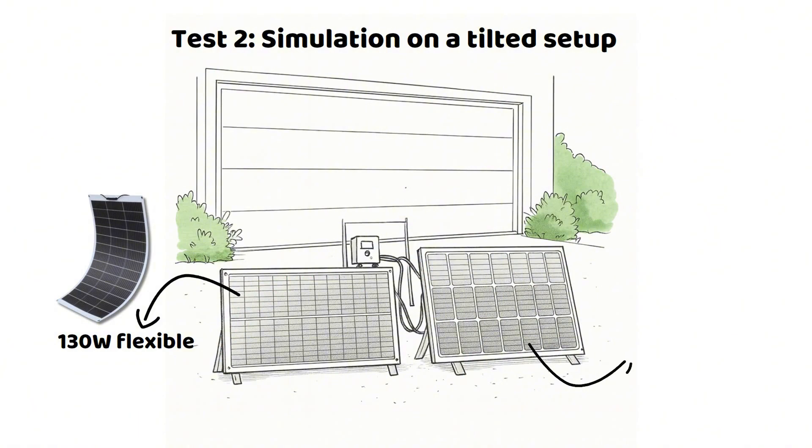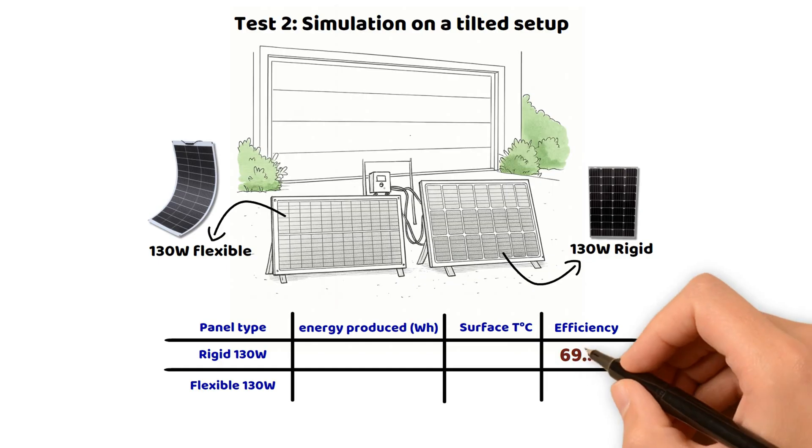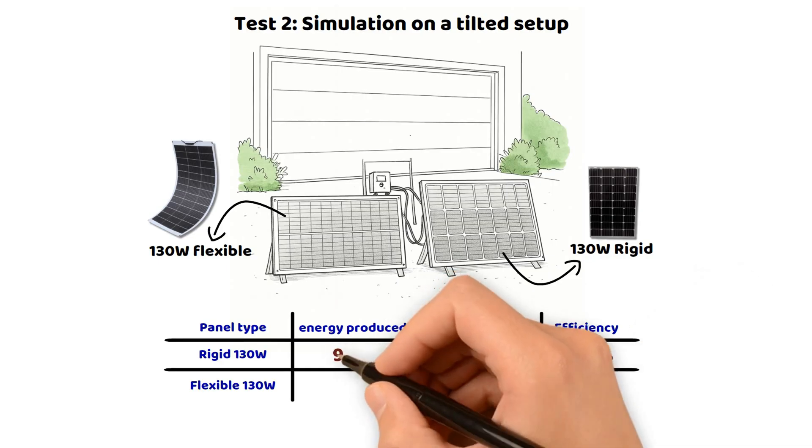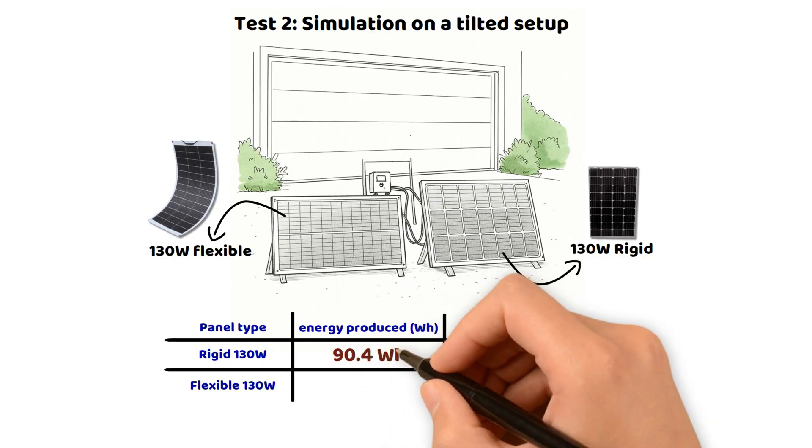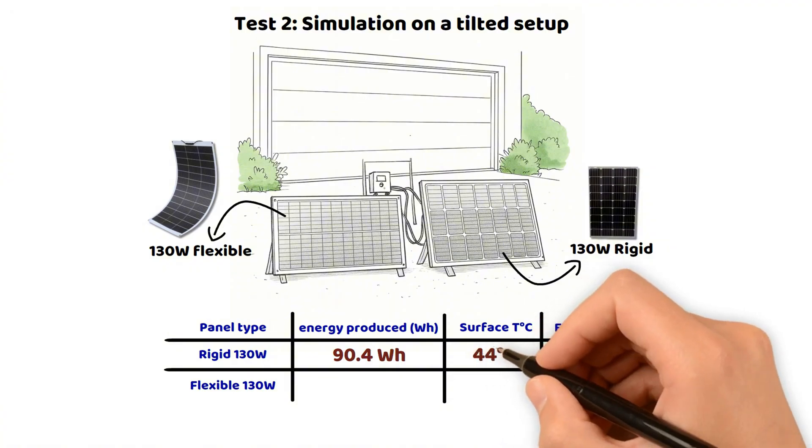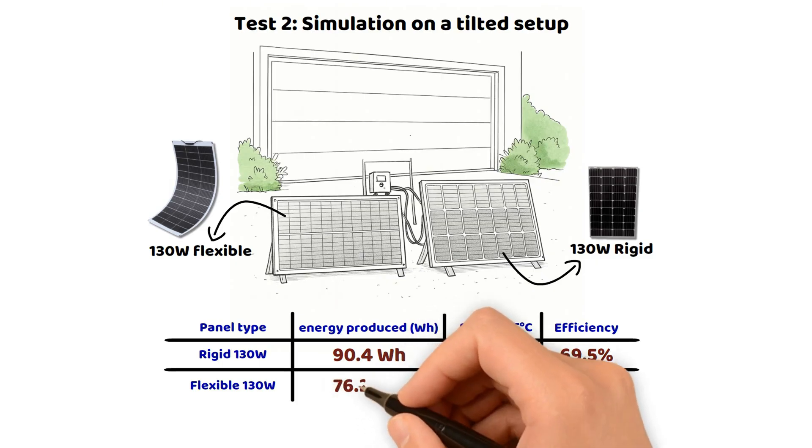So we compared the real performance of these two 130 watt solar panels, one rigid, the other flexible. When they are tilted toward the sun with good ventilation underneath, conditions close to what we could call an ideal solar system. Starting with the rigid panel, efficiency went from 61% to almost 70%, with nearly 90.4 watt hours, which is actually not that great. I was expecting much more than that, but I will come back to it later because I need to point out an important factor to consider. The temperature recorded was 44 degrees.